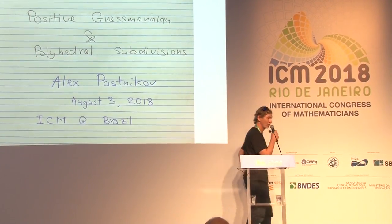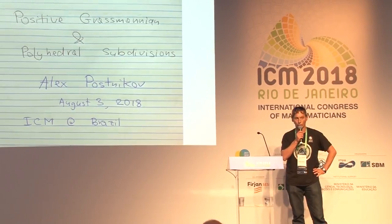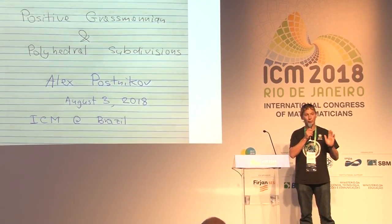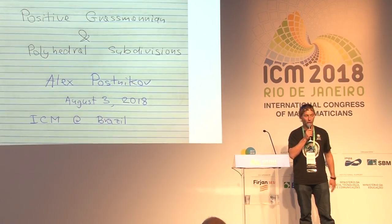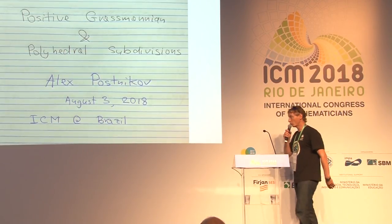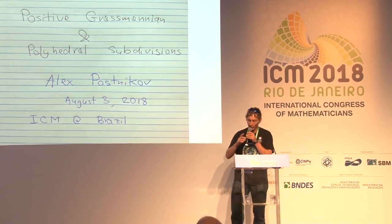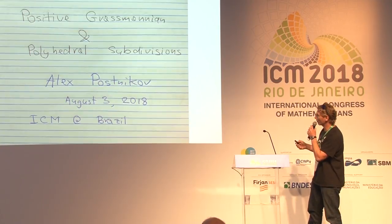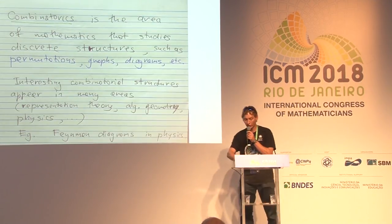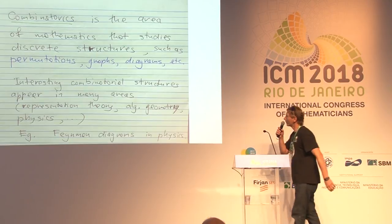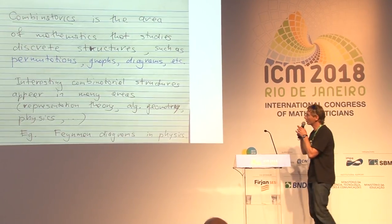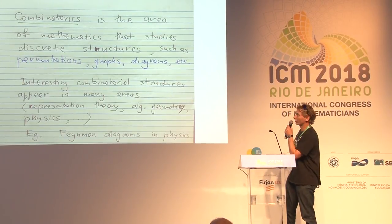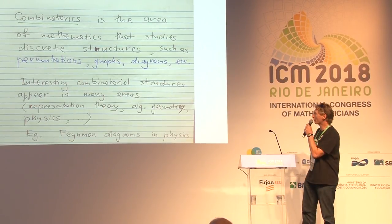The main area of my research is algebraic combinatorics. Since we expect a broad audience, let me describe what combinatorics is. Combinatorics is the area of mathematics that studies discrete structures such as permutations, graphs, diagrams of various kinds, and so on.